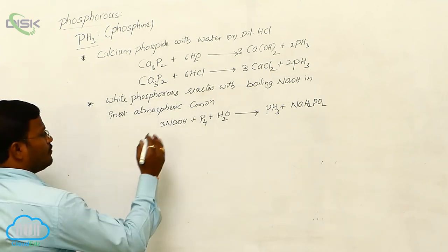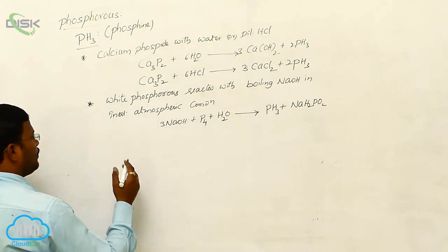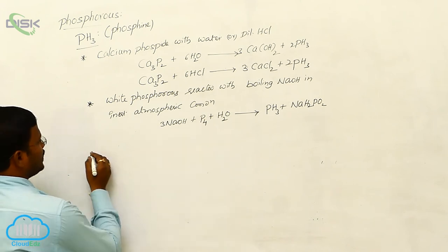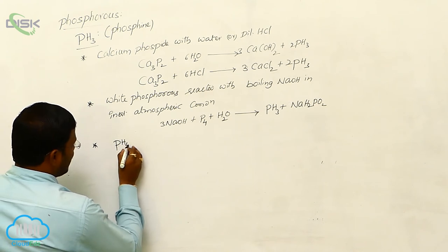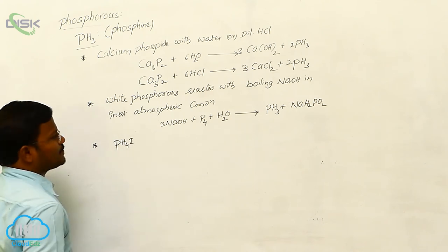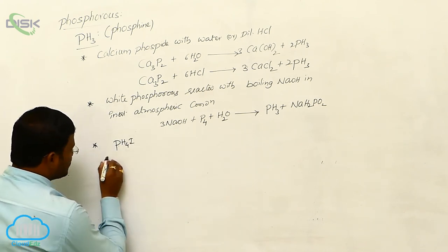Here, sodium hydrogen phosphite or sodium hypophosphite. And next one, one more convenient method available for the production of phosphine is from phosphonium salts.